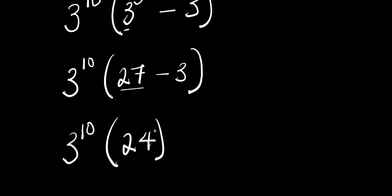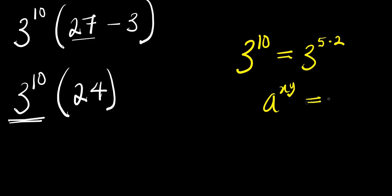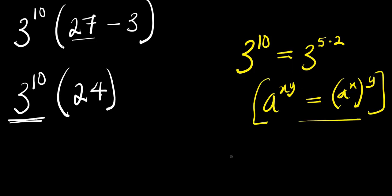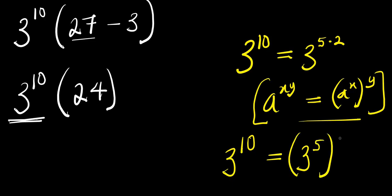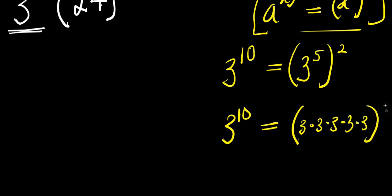Now, 3^10 is just like writing 3^(5×2). And if you have a^(x times y), this is just like writing (a^x) to the power y. Applying this here, 3^10 is the same as writing (3^5)^2. So we need to compute 3 times 3 times 3 times 3 times 3, all squared.